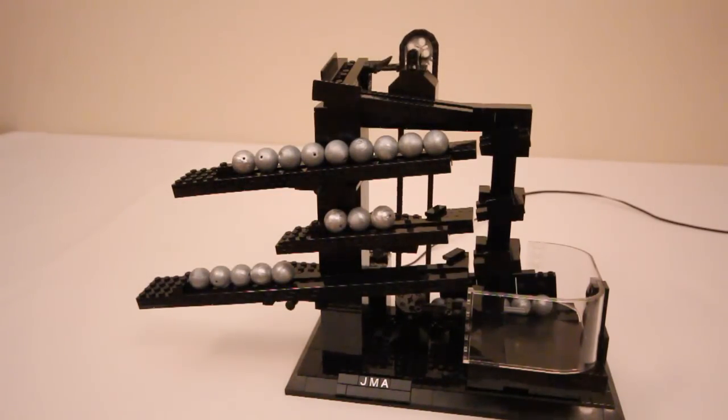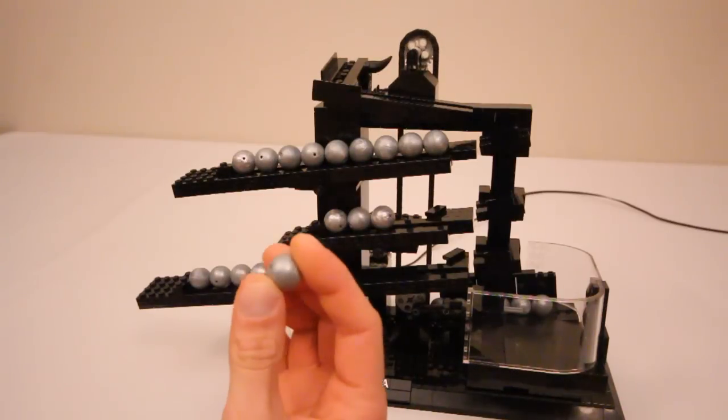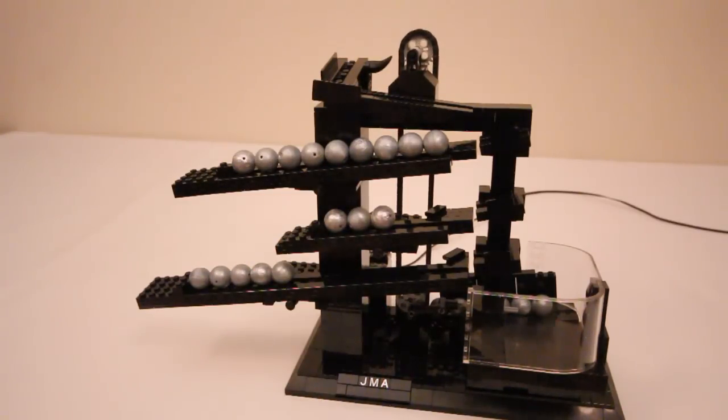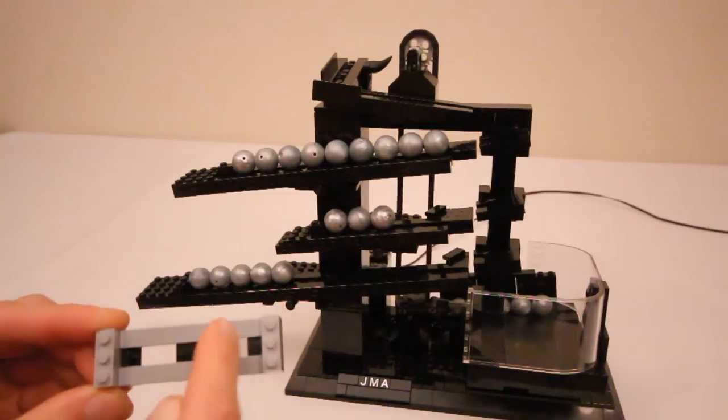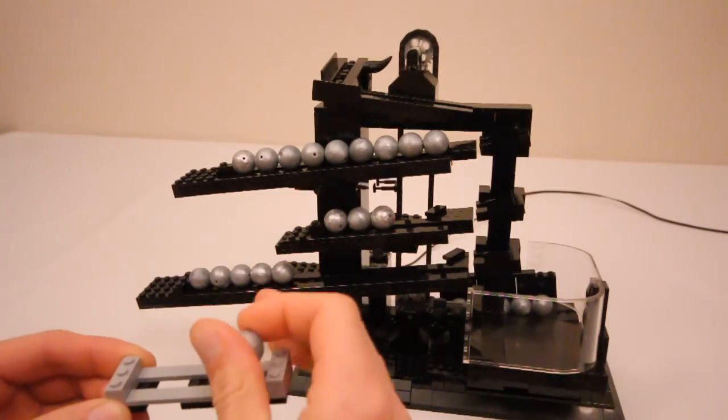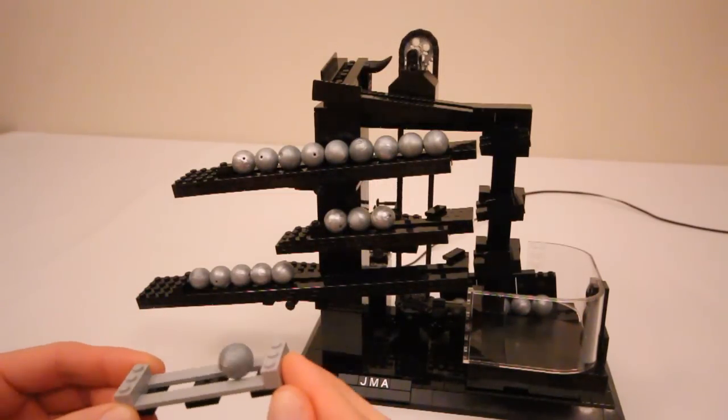For balls I'm using these Bionicle Xamor spheres, and the rail system is built using a set of parallel flat tiles that creates a channel that the balls can roll through.